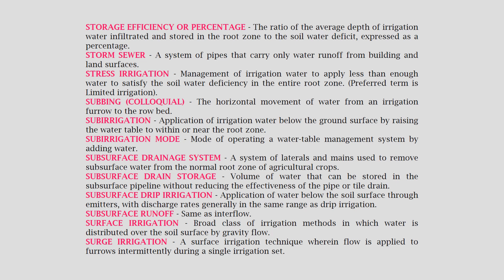Storage efficiency: the ratio of the average depth of irrigation water infiltrated and stored in the root zone to the soil water deficit, expressed as a percentage. Storm sewer: a system of pipes that carry only water runoff from building and land surfaces. Stress irrigation: management of irrigation water to apply less than enough water to satisfy the soil water deficiency in the entire root zone.